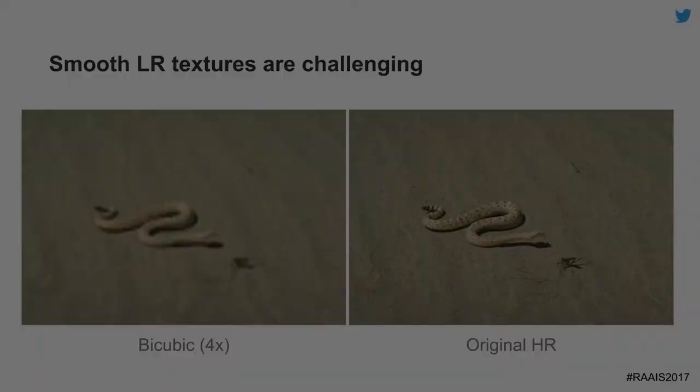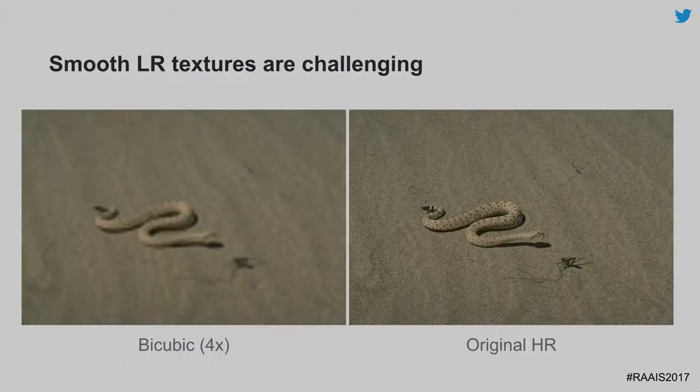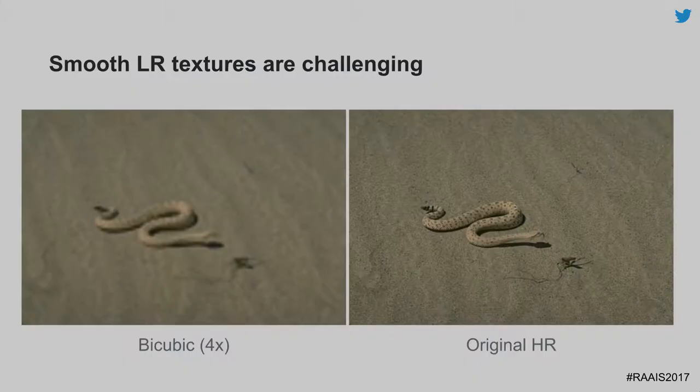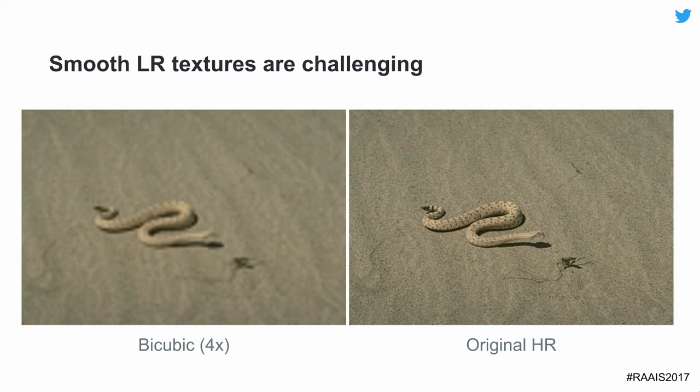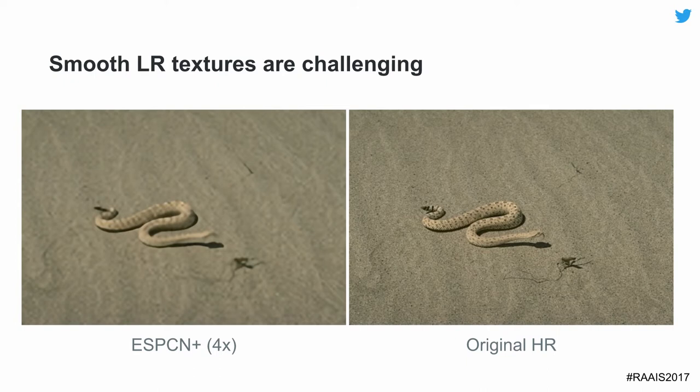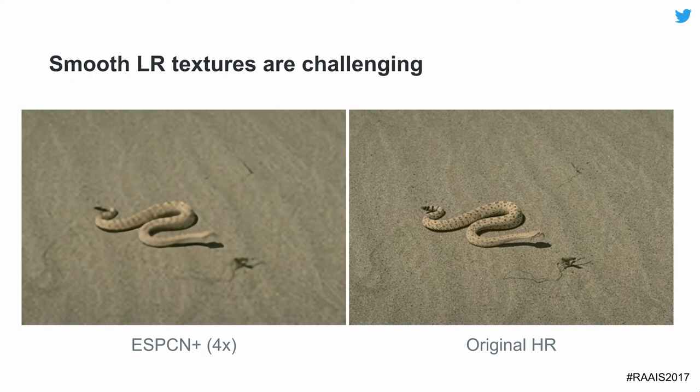One of the limitations of this approach is that we're still looking at it from the context of interpolation. The fundamental problem is that we can't restore fine textures that were never there in the low-resolution space. If we look at smooth textures in low-resolution and apply bicubic upsampling to match high-res size, there's a massive difference in fidelity. Even applying our previously trained super-resolution network, we can at best restore the outlines, but the fine-grained detail is missing.